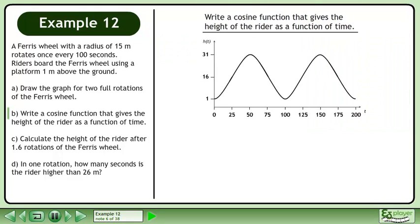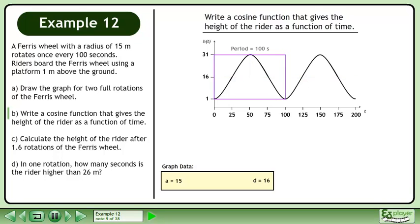Bring up the graph from part A. The vertical displacement is 16 meters. The amplitude is 15 meters. The period is 100 seconds.